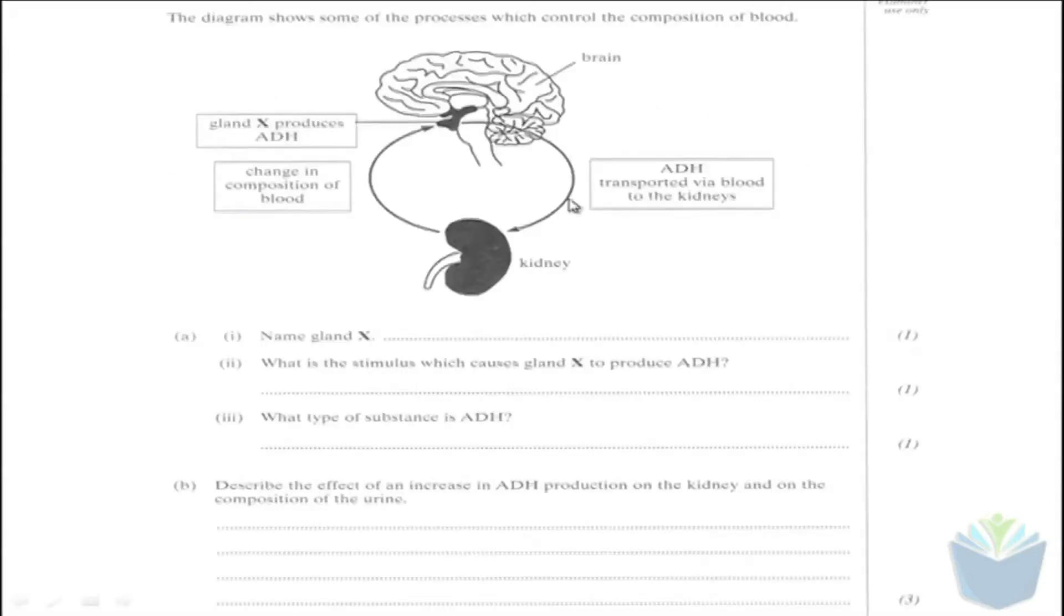So here we've got an example of a paper. The question is asking you first of all to identify Gland X. It's looking for which process controls the composition of blood. Now, ADH is produced by the pituitary gland, so Gland X should be the pituitary gland.